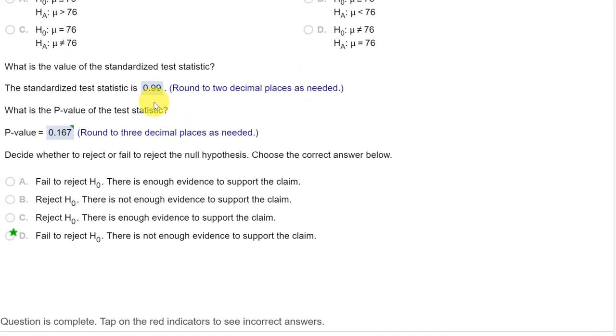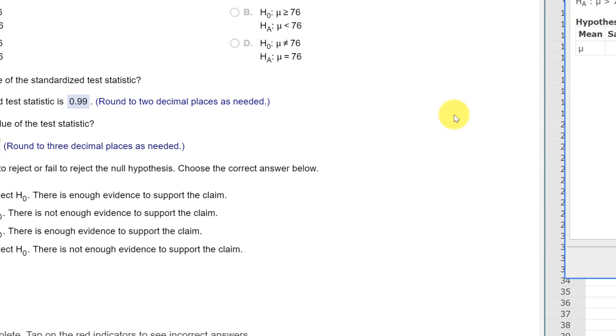And those are the answers that they want, the standardized test statistic at 0.99, and the p-value of 0.167.